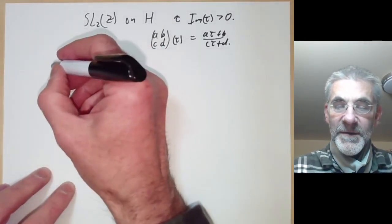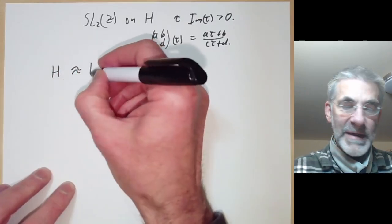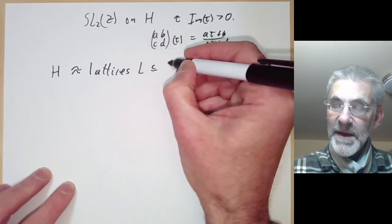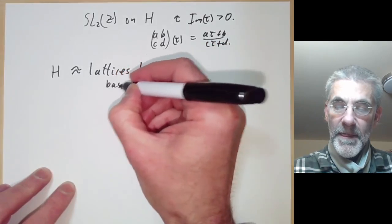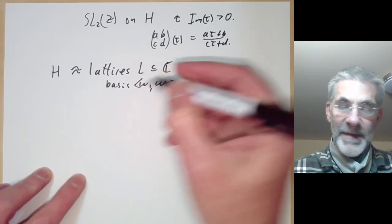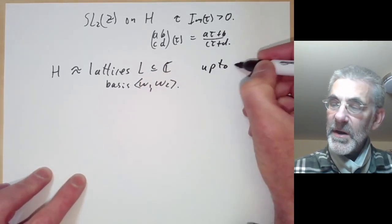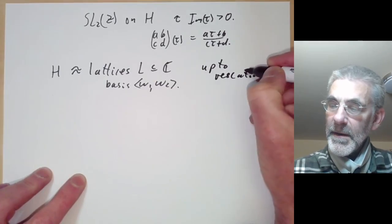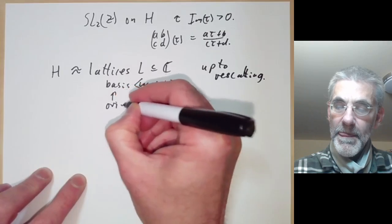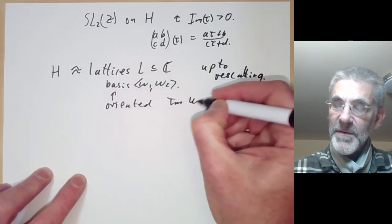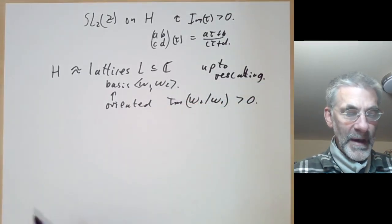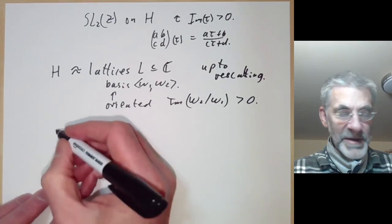So first of all we recall we can think of H as being the same as lattices L in C with a basis omega-1, omega-2, and these lattices are up to rescaling. And furthermore the basis should be oriented, which means the imaginary part of omega-2 over omega-1 should be greater than zero.